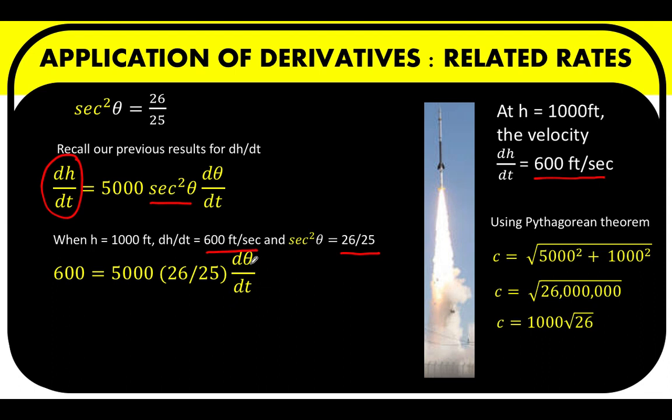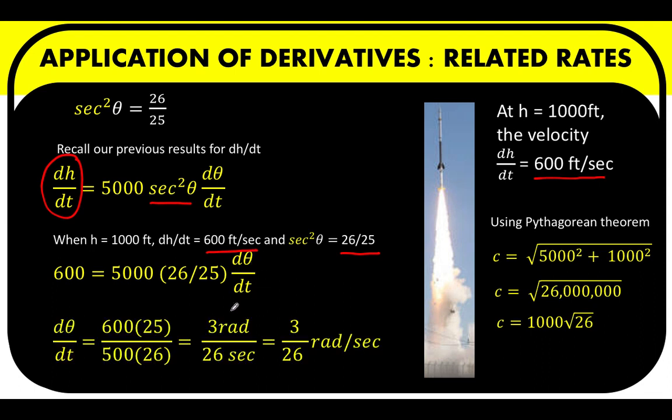Now solving for d theta over dt, we arrive at a value of 3 over 26 radian per second. Now what does this represent? This represents the change in the angle of the camera with respect to the change in time.